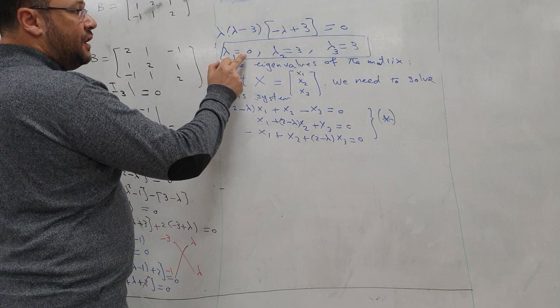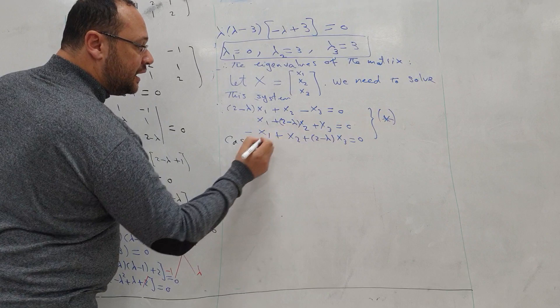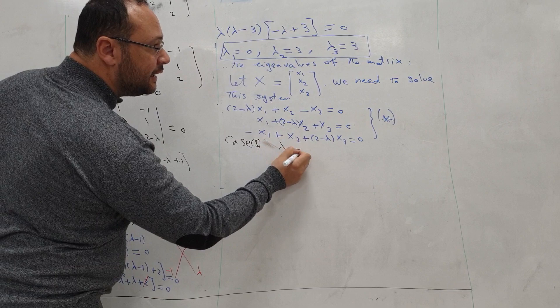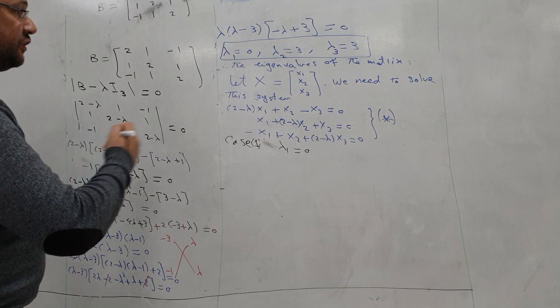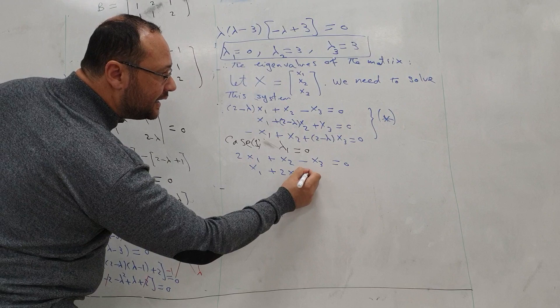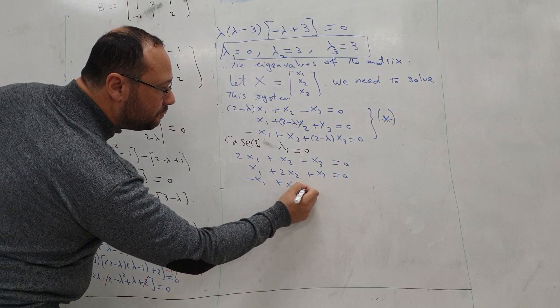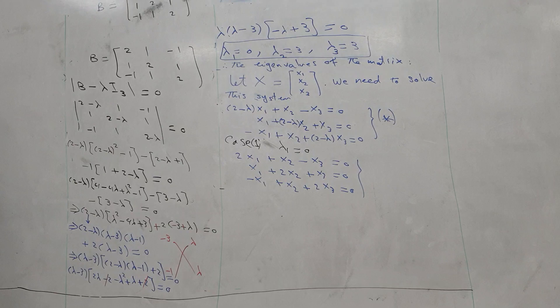We have three cases: lambda1 equals 0, and the other two cases lambda equals 3. Case 1: we solve the system for lambda1 equals 0. By substituting lambda equal 0, the system reduces to: 2x1 + x2 minus x3 = 0; x1 + 2x2 + x3 = 0; minus x1 + x2 + 2x3 = 0.